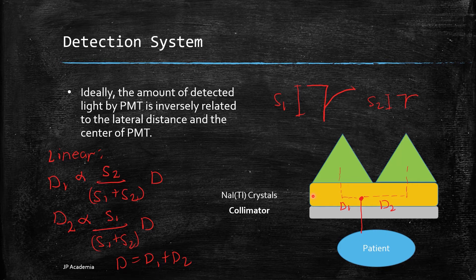Ideally, the amount of detected light by the photomultiplier tube is inversely related to the lateral distance and the center of the PMT. We also have here the signal detected by this first PMT S1, then a smaller signal here for S2. The relationship between the signal amplitude and location with respect to the PMT center would be linear.